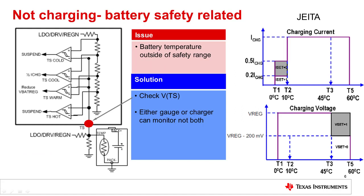The second issue we will talk about is related to battery temperature. The issue is that the battery temperature is outside of the safety range. As you can see from the figure, you want your battery to be between T1 and T5 — anything in that range should be charging. Anything colder than T1 or hotter than T5, the battery will stop charging for protection reasons. The solution is to check the voltage of your TS pin, which will tell you if the temperature is within acceptable range. Note that either the gauge or the charger can monitor this, not both.